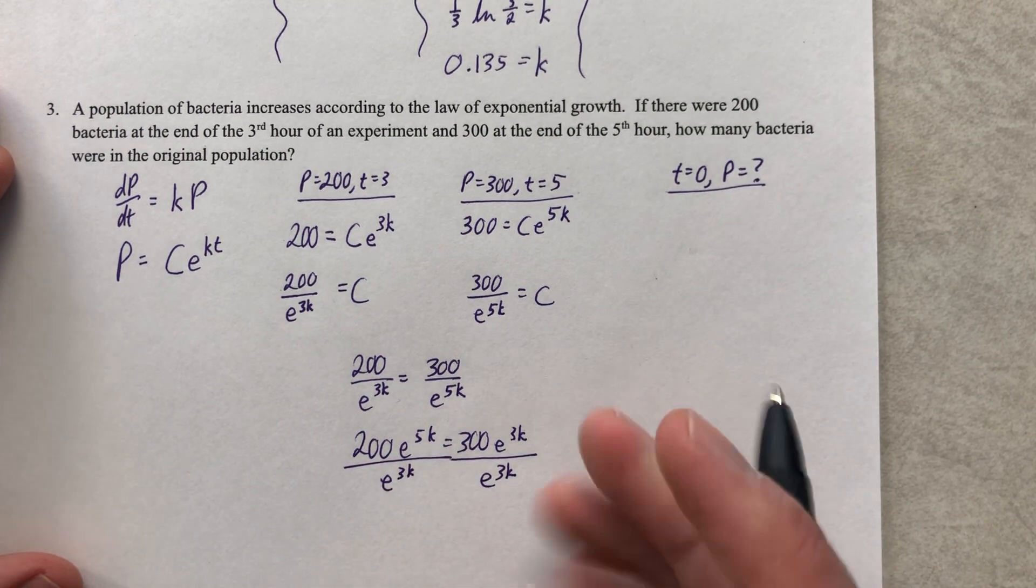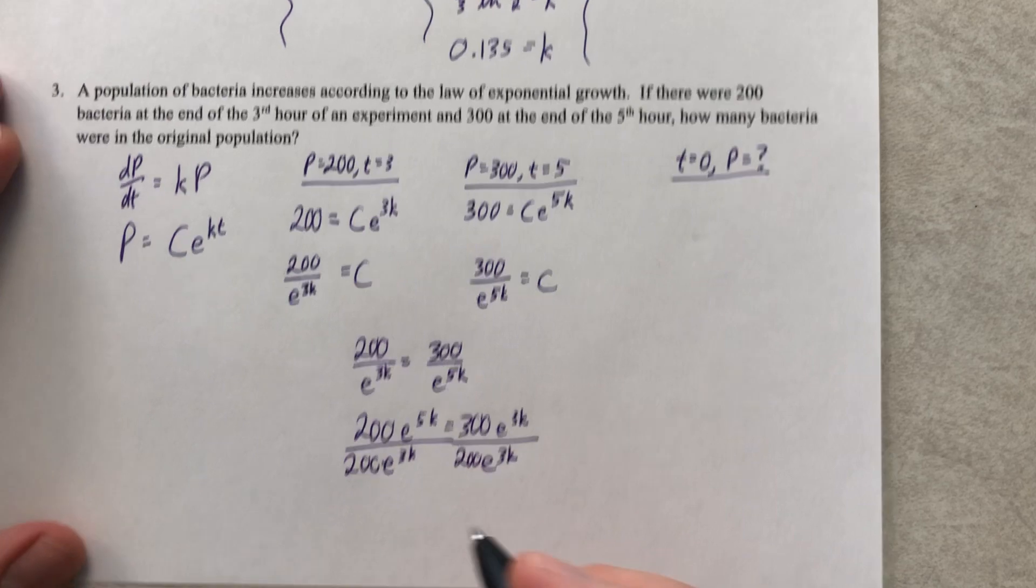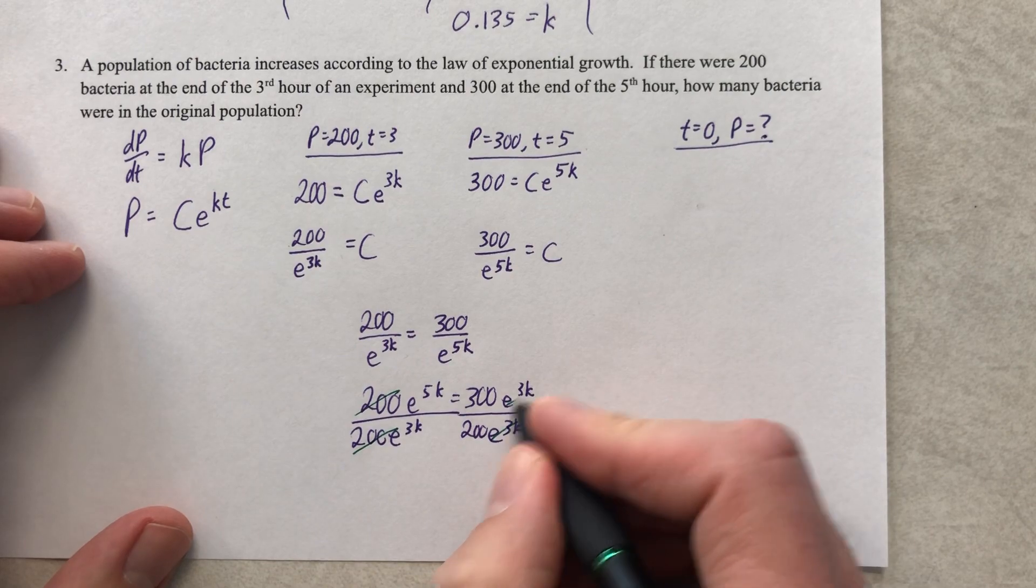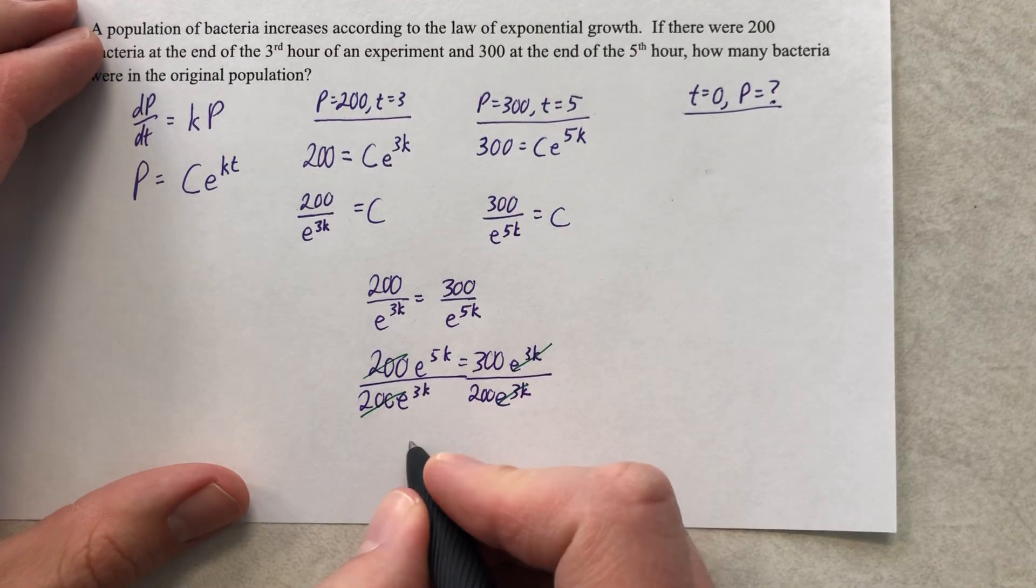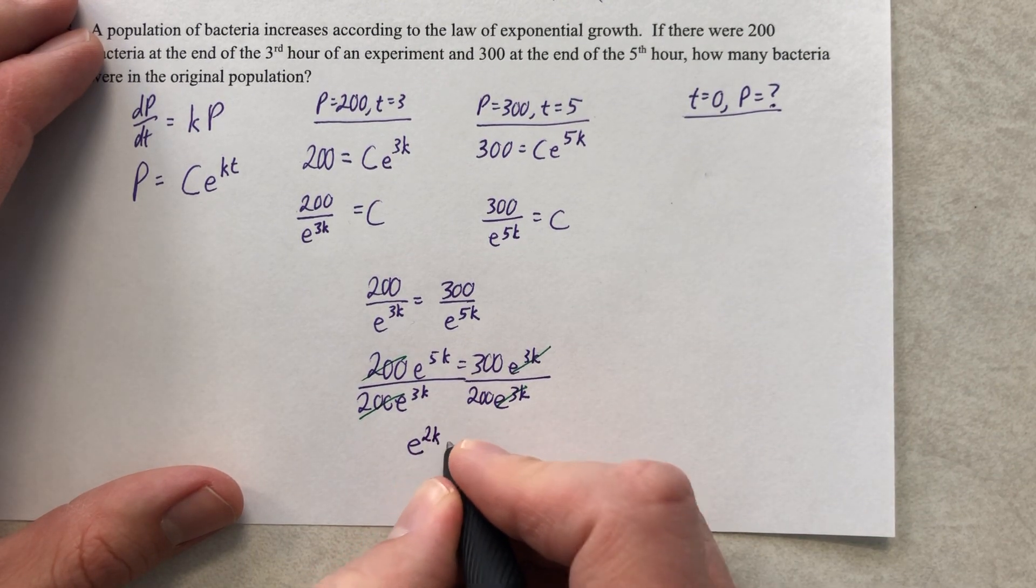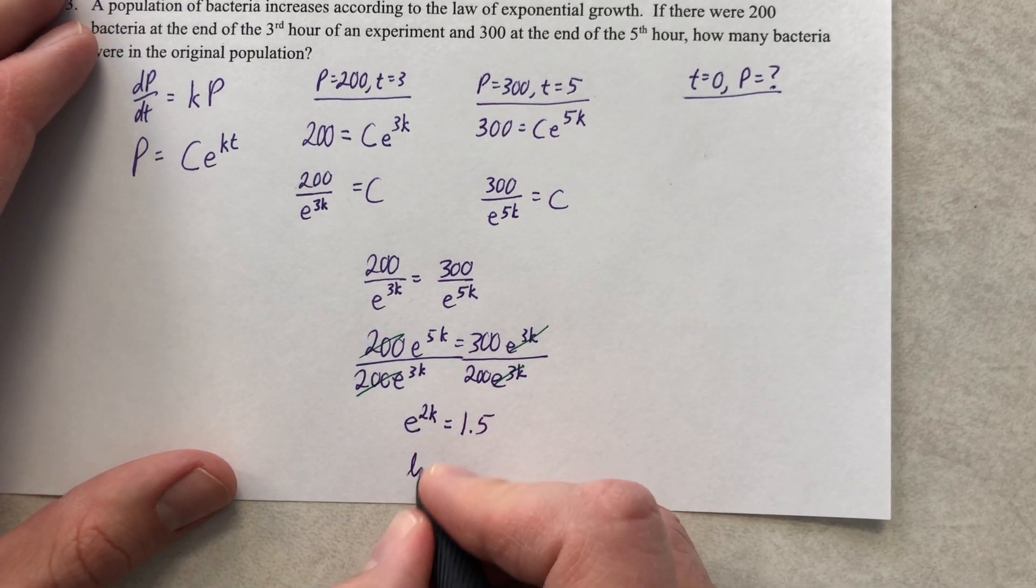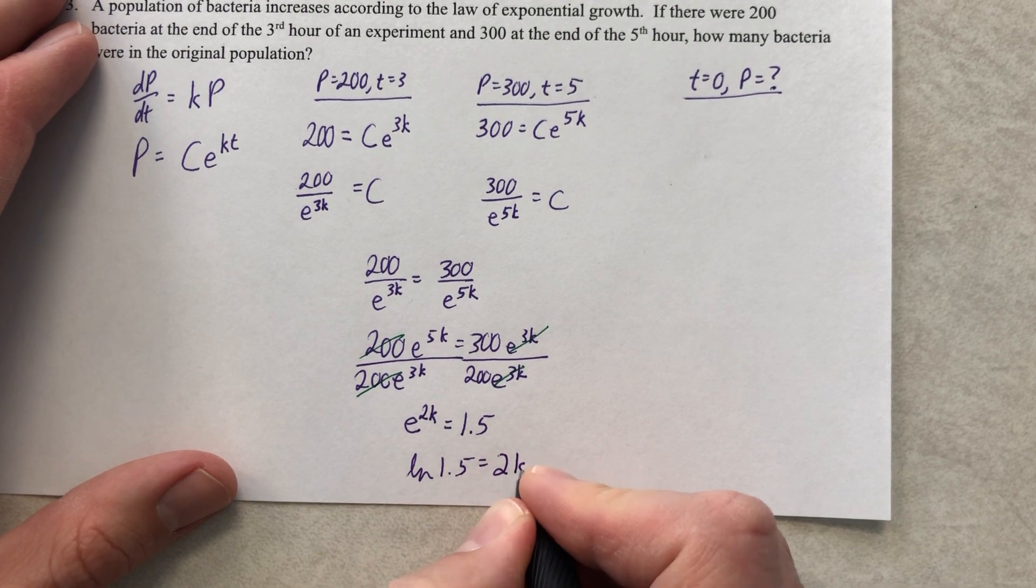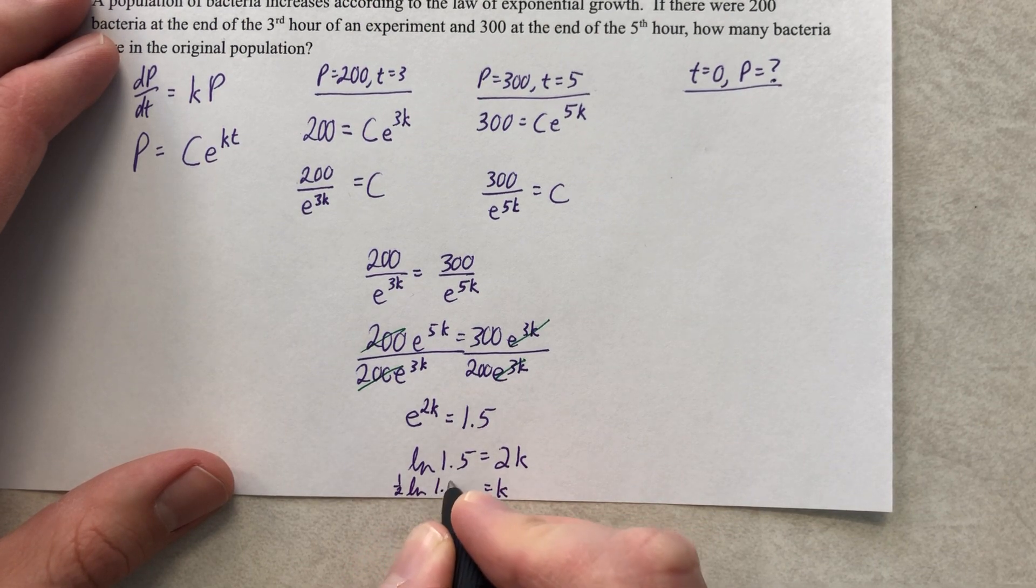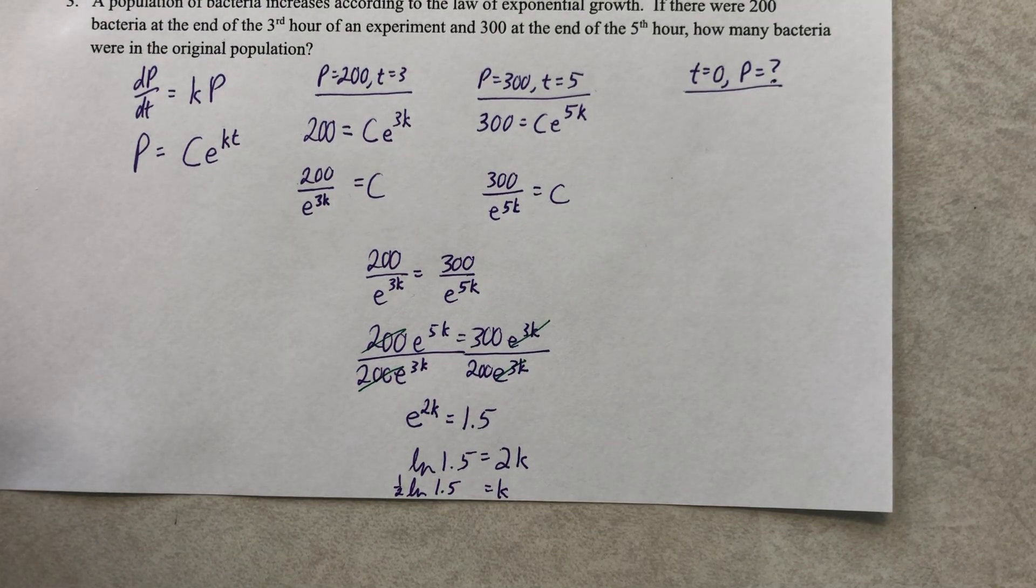We're going to keep solving for k. Eventually, we're going to need to know what C is. That's technically what they're asking here. We can't really get there without knowing what k is unless we do some unnecessarily difficult math. So let's get k by itself. I think we can divide by e to the 3k. Let's divide by 200 as well. I'm left with e to the 5k over e to the 3k. Subtract your exponents, that's 2k. And then 300 divided by 200 is 1 1/2. Natural log of 1 1/2 is 2k. So k is half of the natural log of 1 1/2. Now we know what k is.